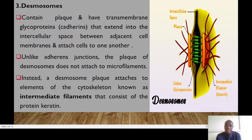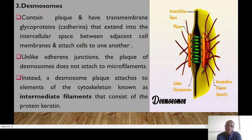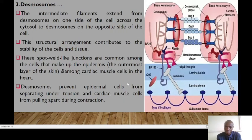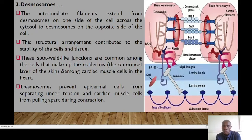Unlike the adherent junction, the plaque of desmosomes does not attach to microfilaments. Instead, a desmosome plaque attaches to filaments of the cytoskeleton known as intermediate filaments, which consist of the protein keratin. These intermediate filaments extend from the desmosomes on one side of the cell across the cytosol to the desmosome on the opposite side of the cell. This structural arrangement normally contributes to the stability of cells and tissues.